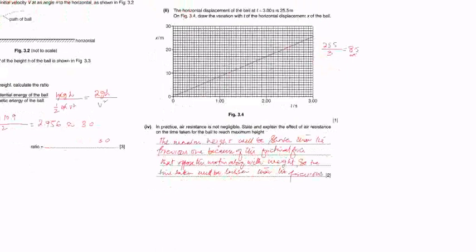So the time taken will be less. The maximum height which is already shorter than the previous one means the time taken will be shorter to reach that maximum height. So the time taken will be less than the previous one.